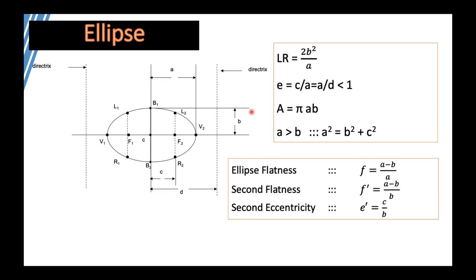The area of an ellipse is πAB. Remember from the drawing that A is always the largest among A, B, and C. The relationship between them is: A² = B² + C². You may also encounter formulas for ellipse flatness, second flatness, and second eccentricity — these are rarely asked, but please be familiarized with them.